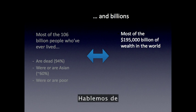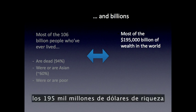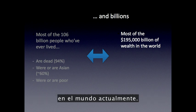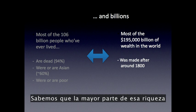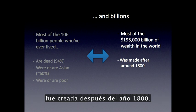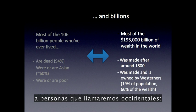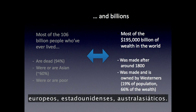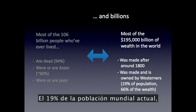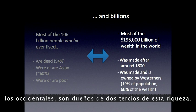Let's talk about the $195,000 billion of wealth in the world today. We know that most of that wealth was made after the year 1800, and we know that most of it is currently owned by people we might call Westerners — Europeans, North Americans, Australasians. Nineteen percent of the world's population today, Westerners own two-thirds of its wealth.